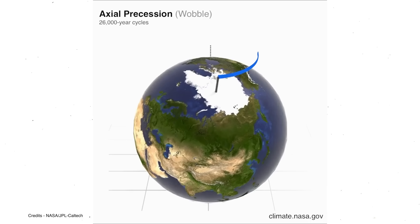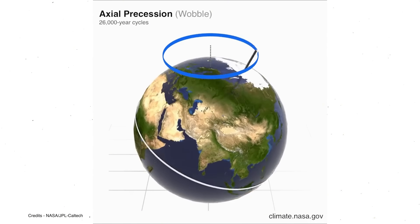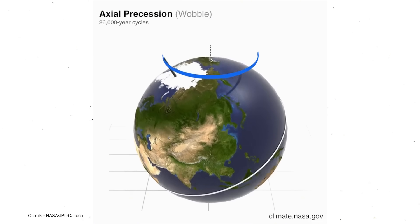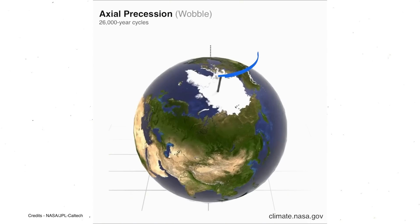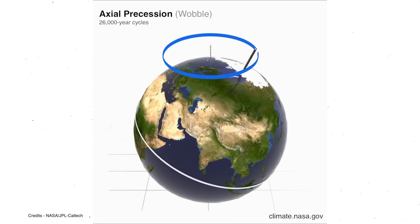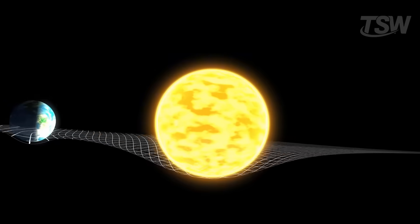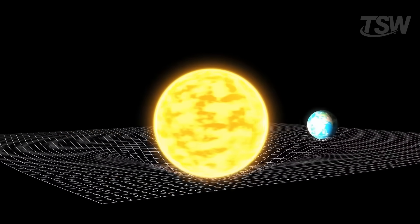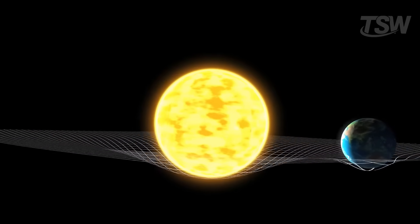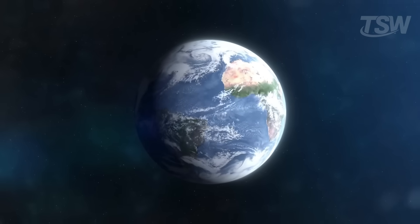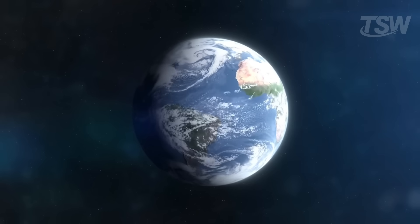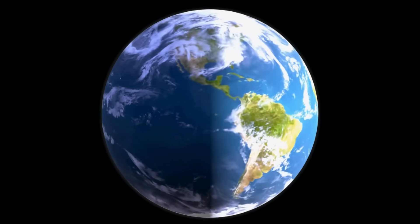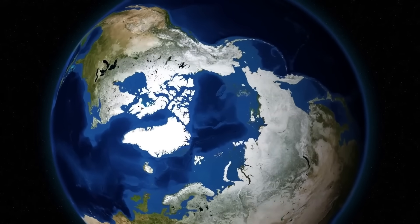Precession might be the most curious of the three. Imagine a spinning top slowly tilting its axis as it rotates — Earth does the same thing. This movement causes Earth's rotational axis to point in different directions over a cycle of about 26,000 years, and it directly affects the timing of the seasons. For example, right now the Northern Hemisphere experiences summer when Earth is farthest from the Sun, which softens the heat. But thousands of years from now, that summer could line up with the point when Earth is closest to the Sun, making summers much more intense. This subtle shift could be enough to start or end an ice age, depending on how it combines with the other two cycles.